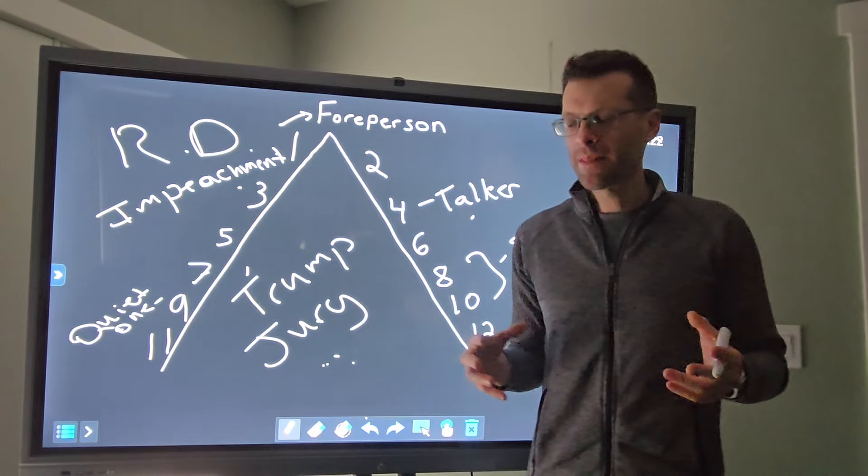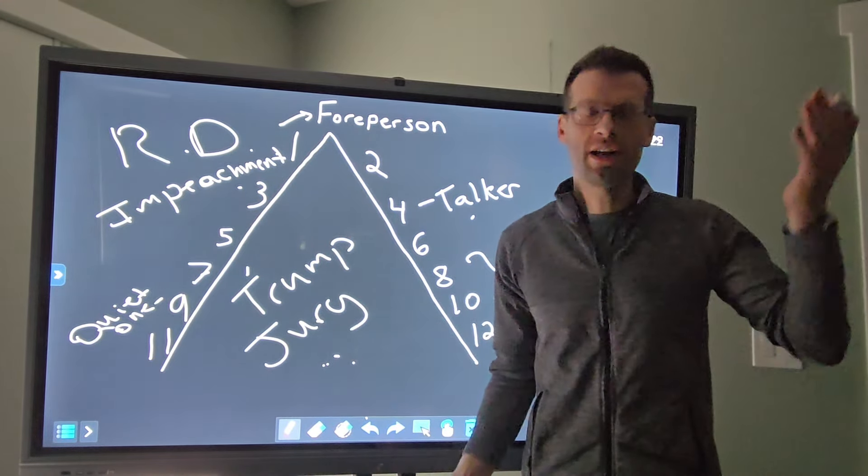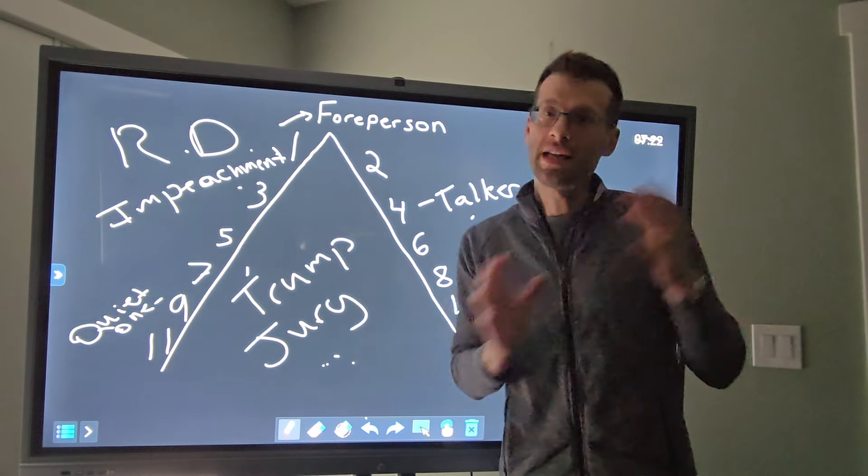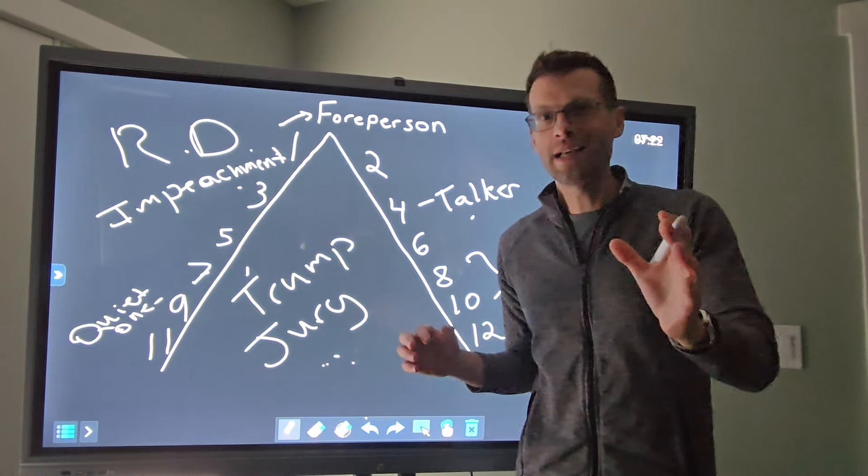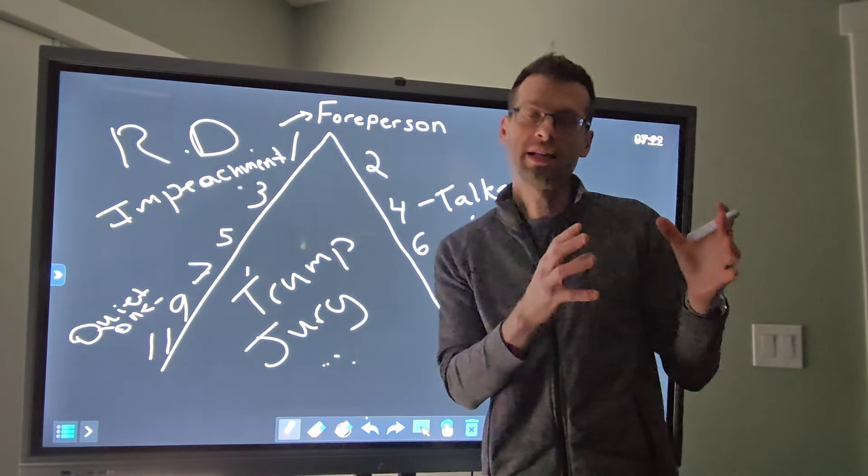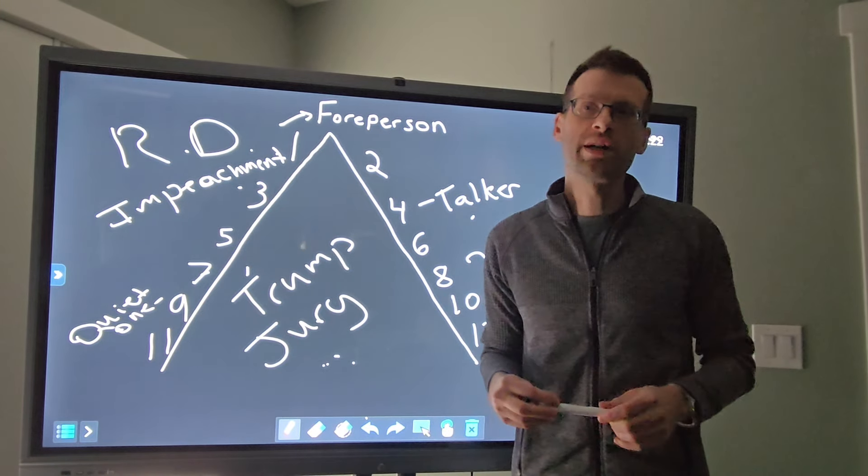Impeachment evidence is interesting because when you're talking about a former president, I know when people see that word and we're talking about a president that's been impeached twice, you must think it has something to do with him being impeached. It has nothing to do with that at all. It's impeachment evidence, it's just evidence that contradicts what the person's saying.